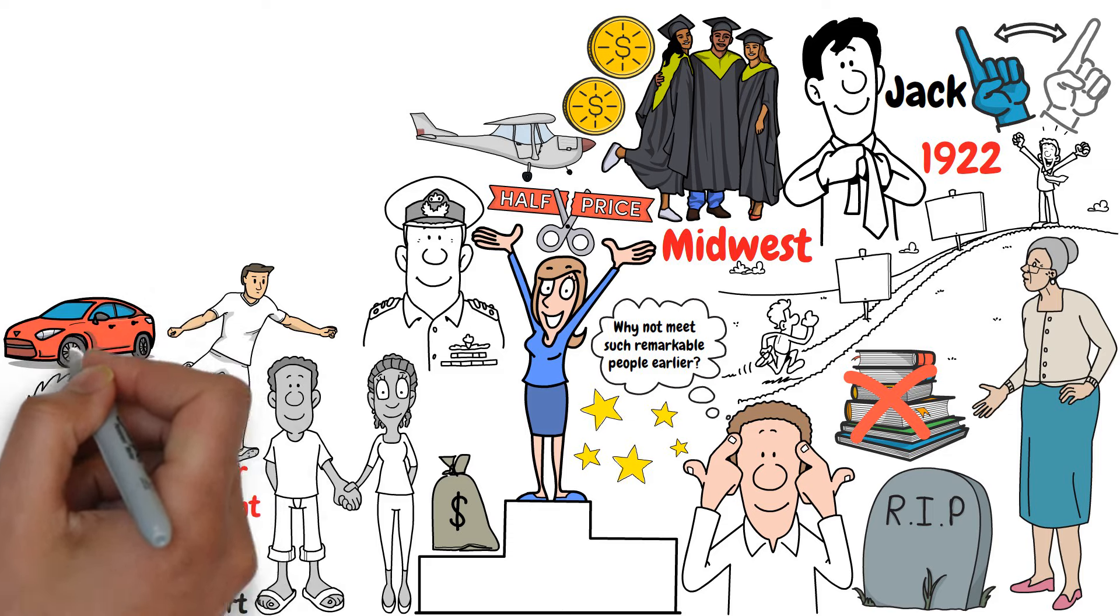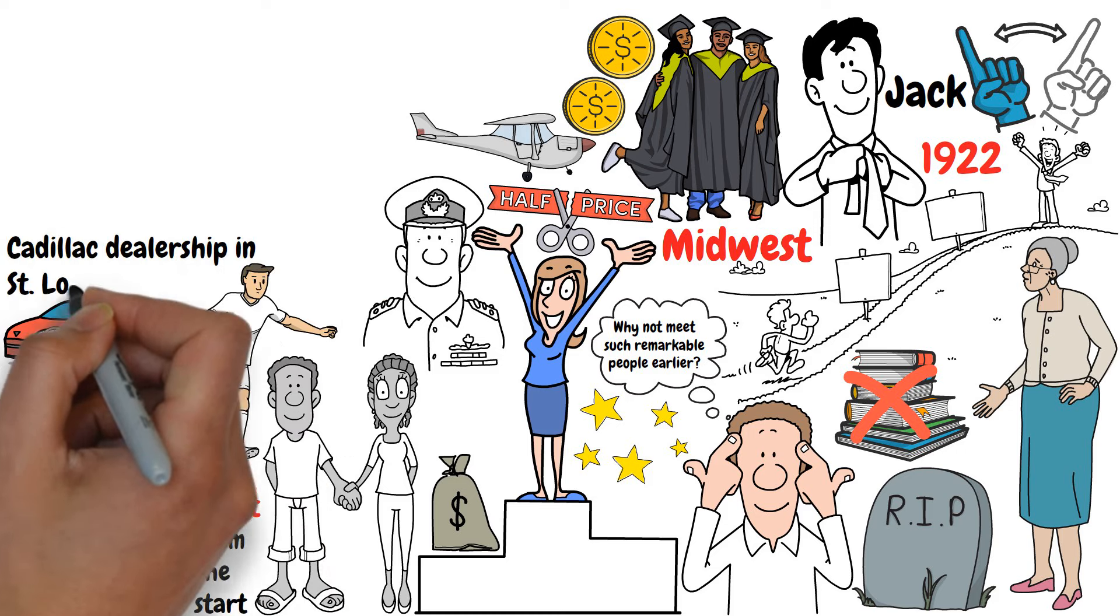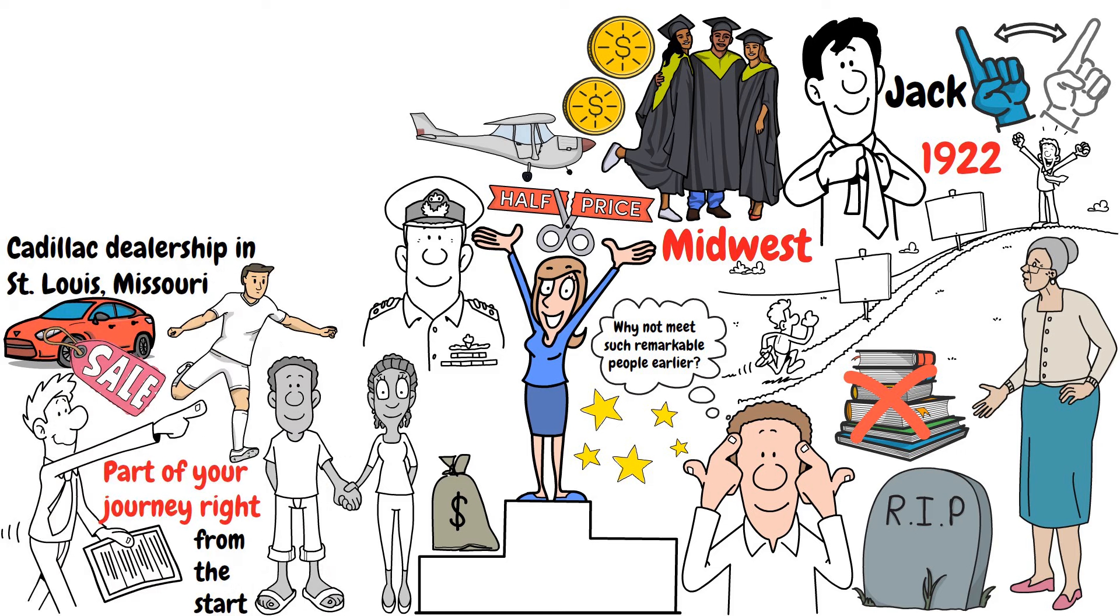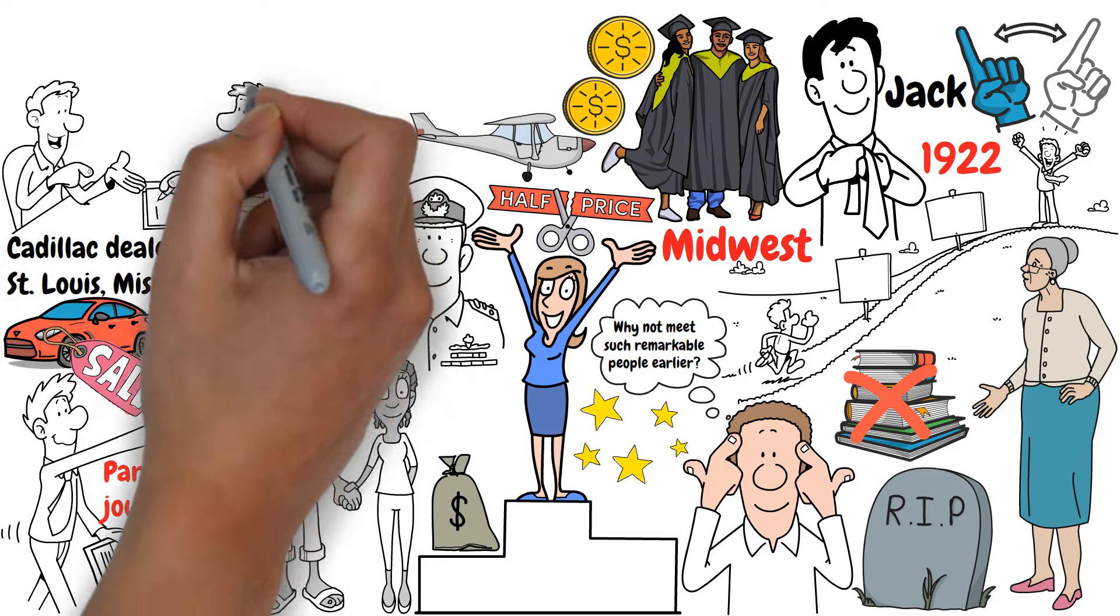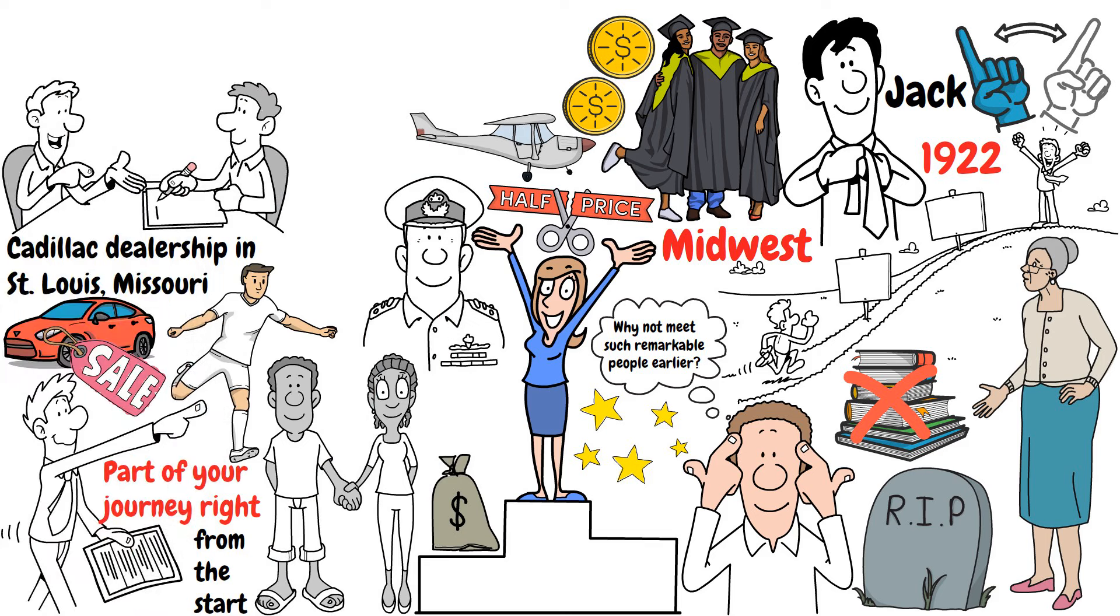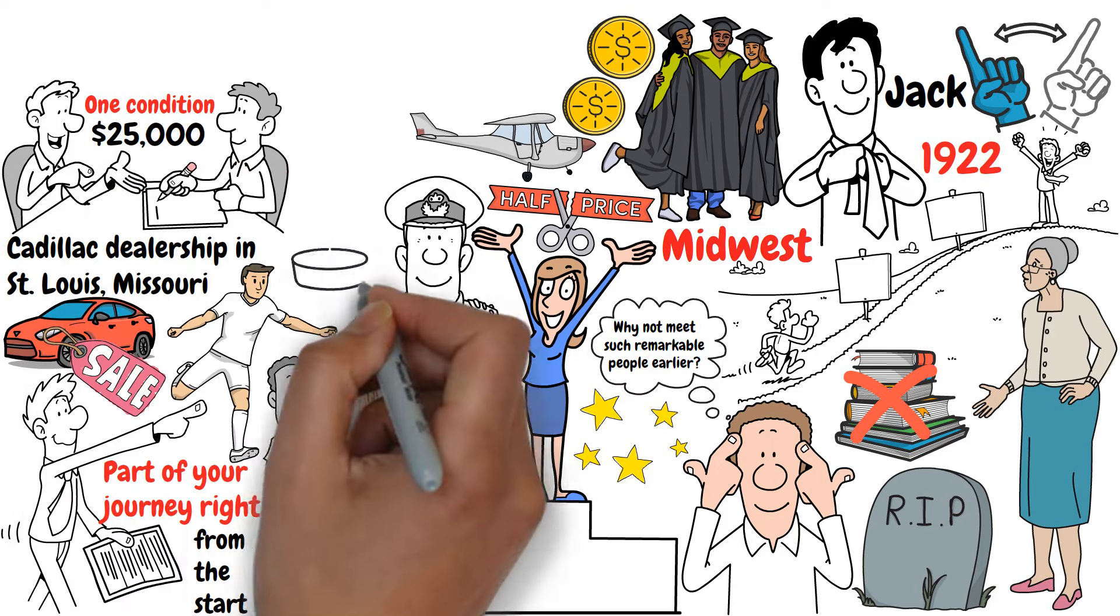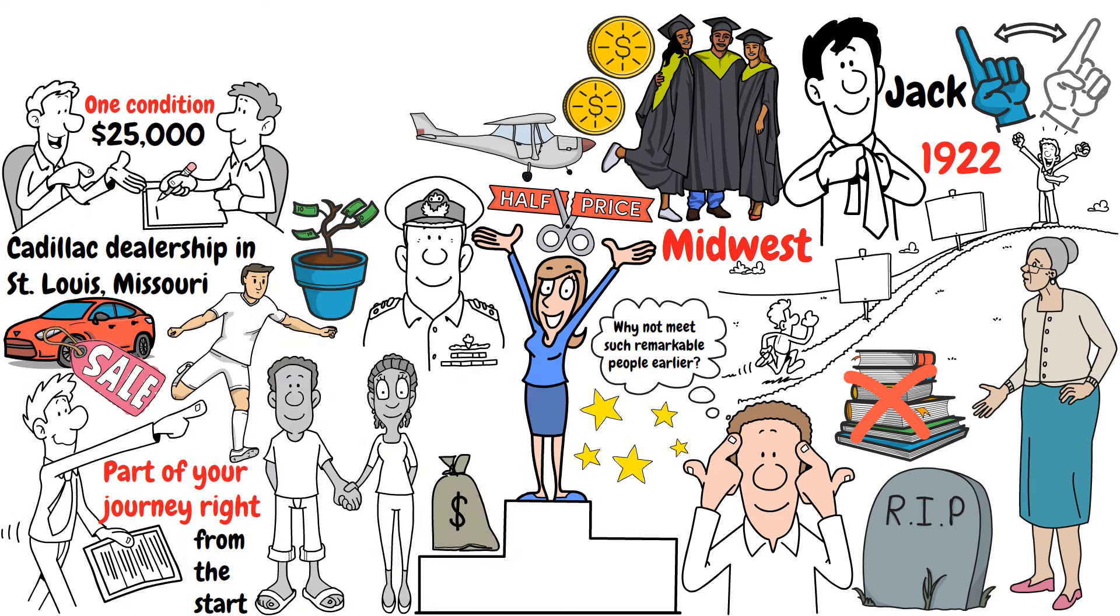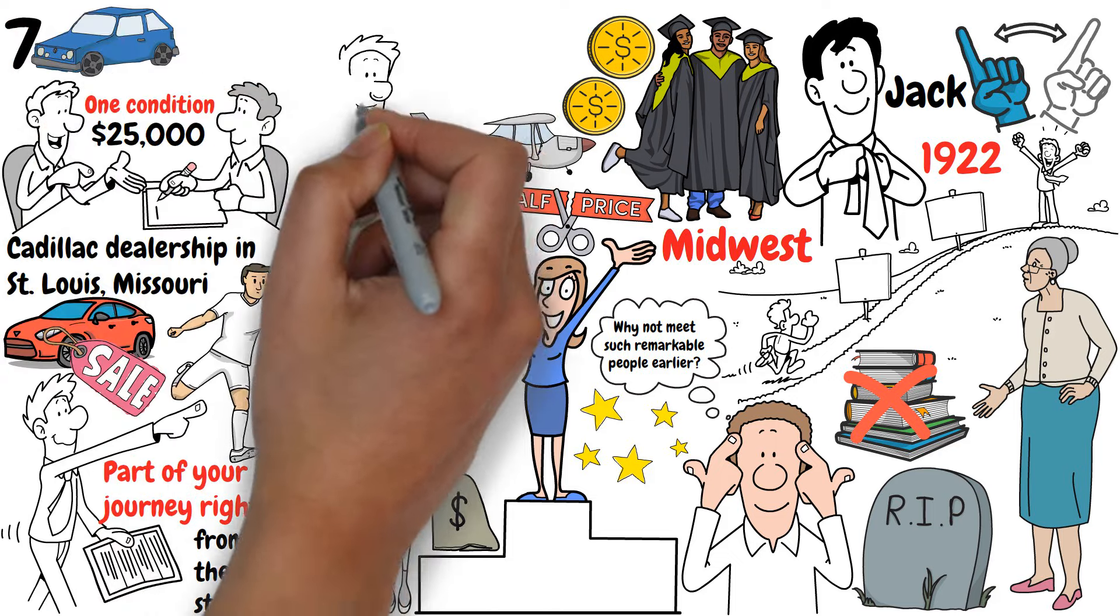After the war, Jack returned to the Midwest. He was about 23 or 24 years old and tried different jobs until he found his place selling used cars at a Cadillac dealership in St. Louis, Missouri. By the time he was 35, he was so good at selling that he proposed starting a car leasing business to his boss. His boss agreed, but on one condition: Jack had to halve his salary and come up with $25,000, which he borrowed to invest in their new venture.